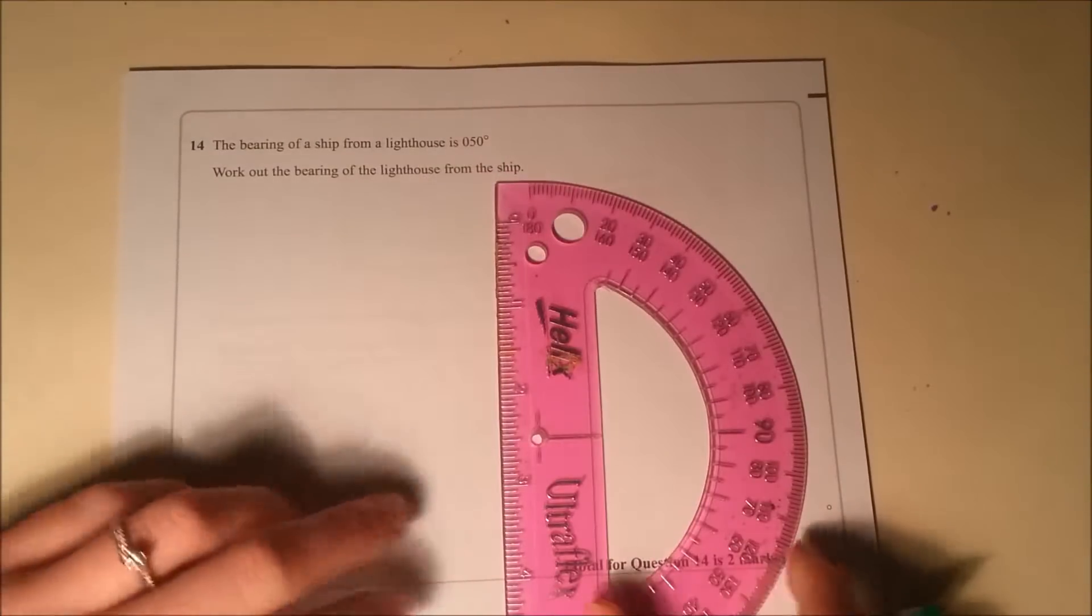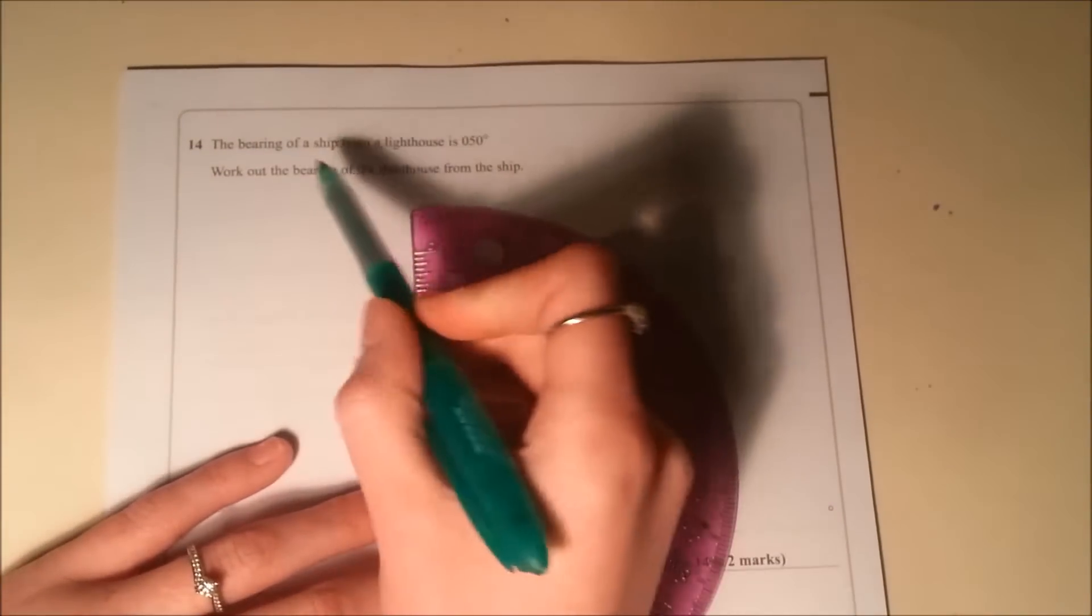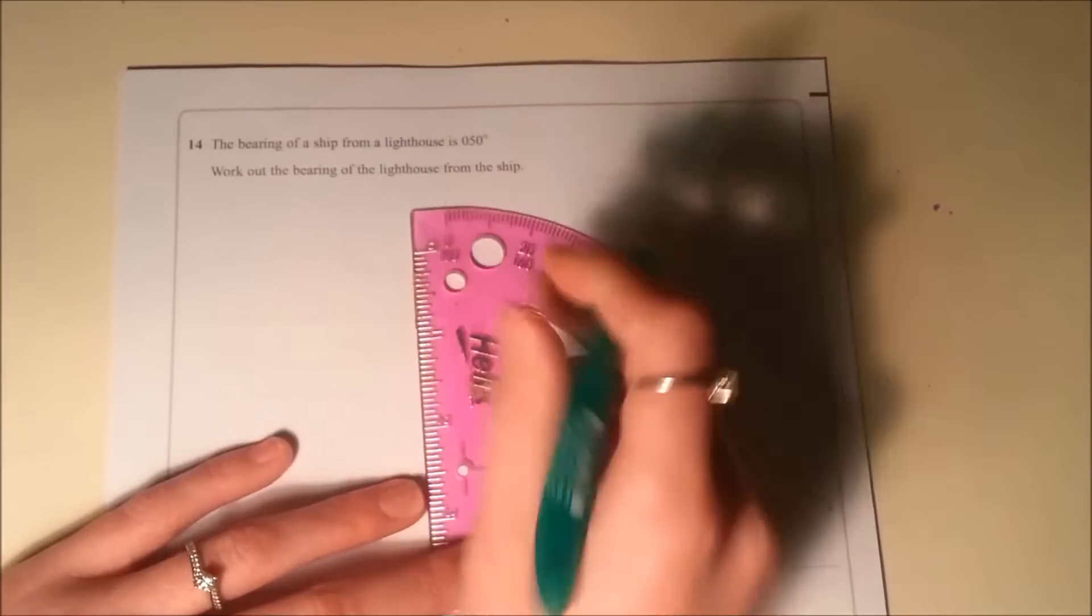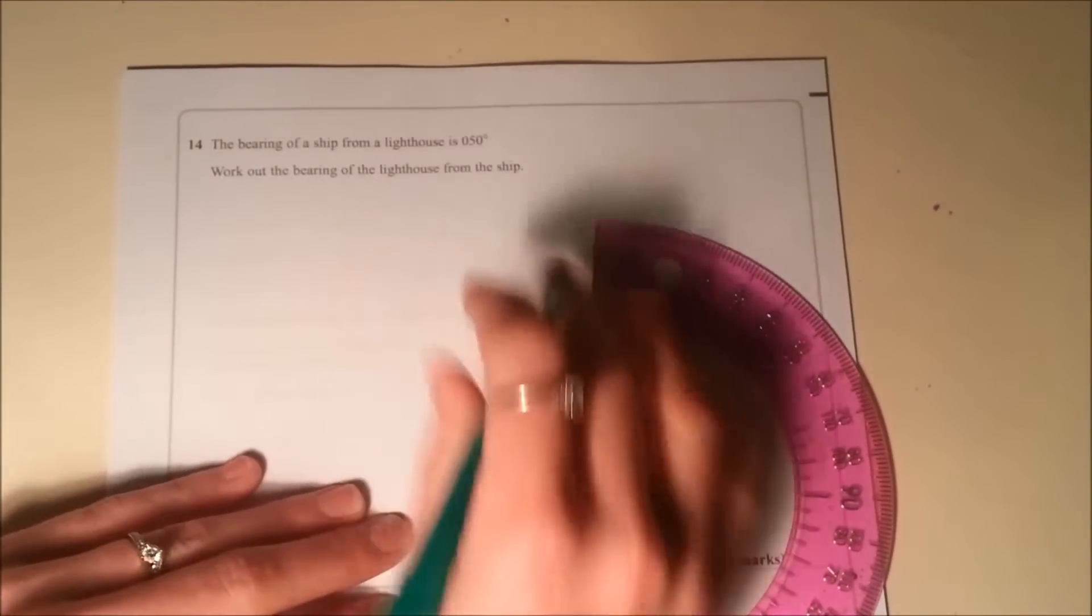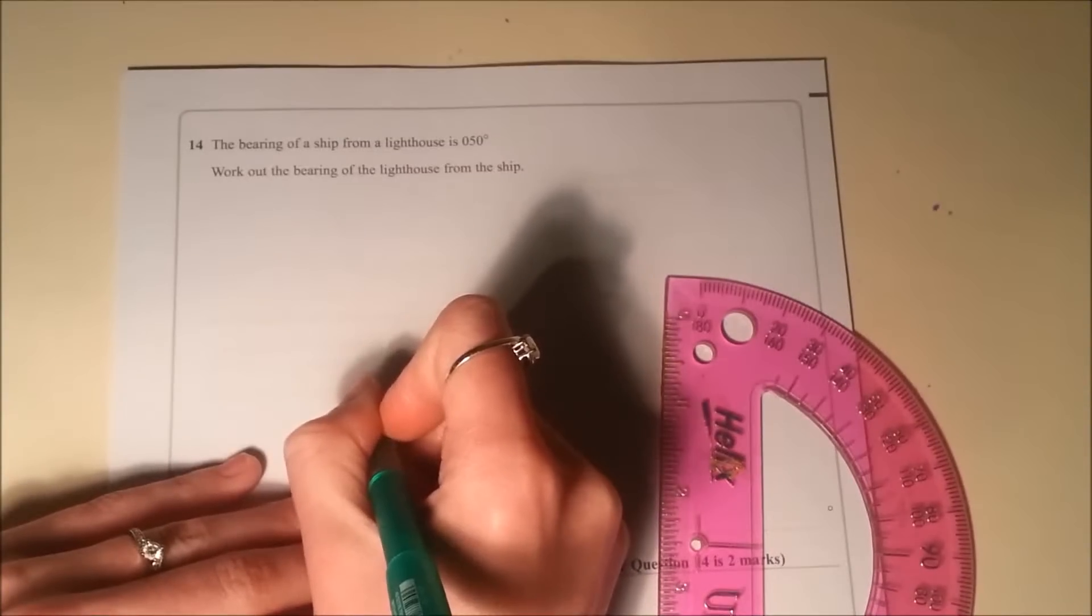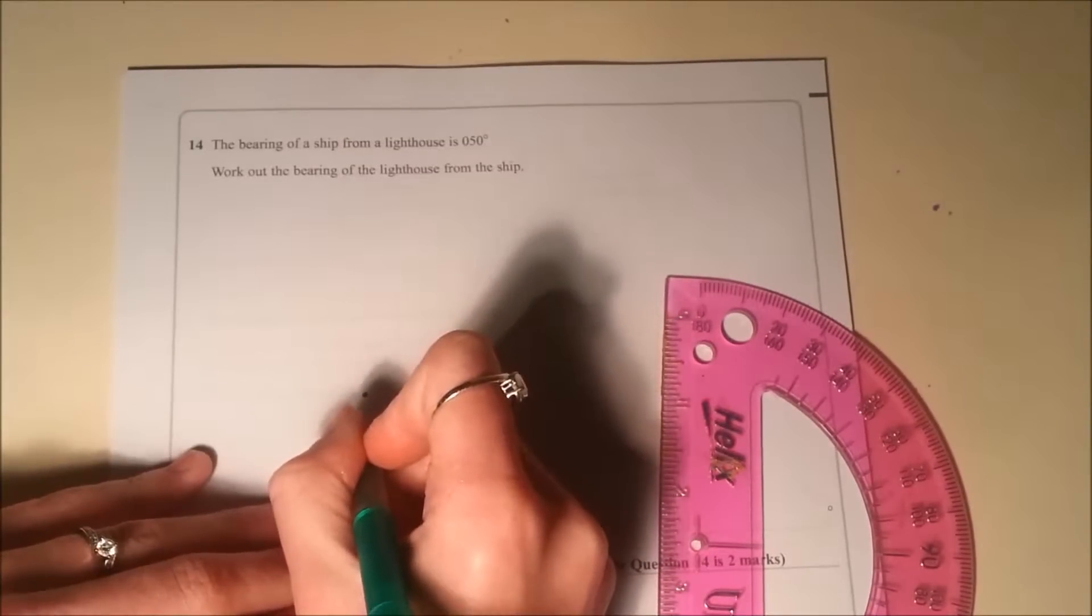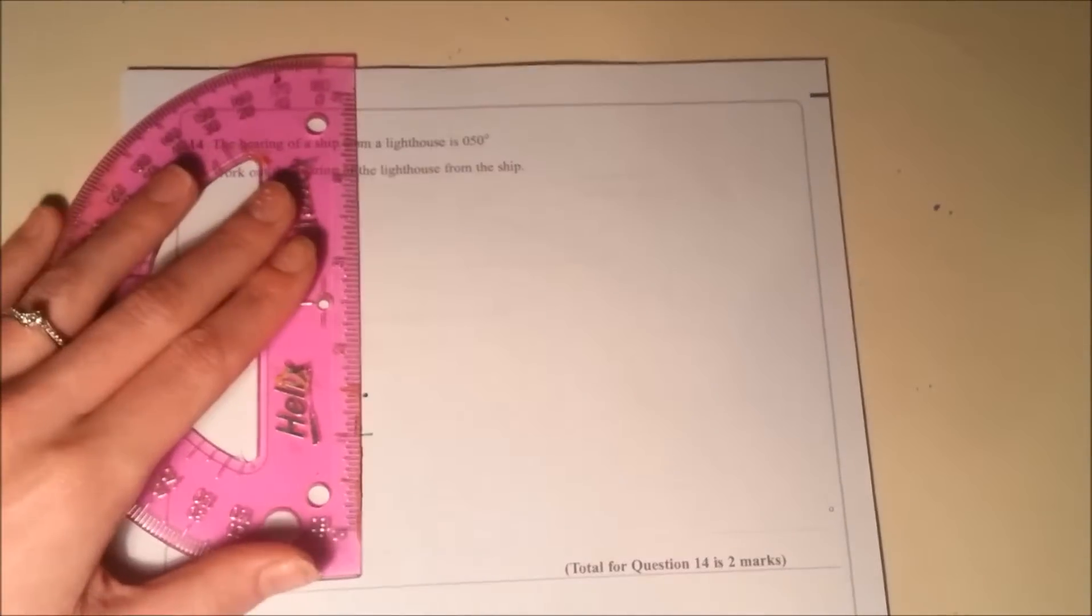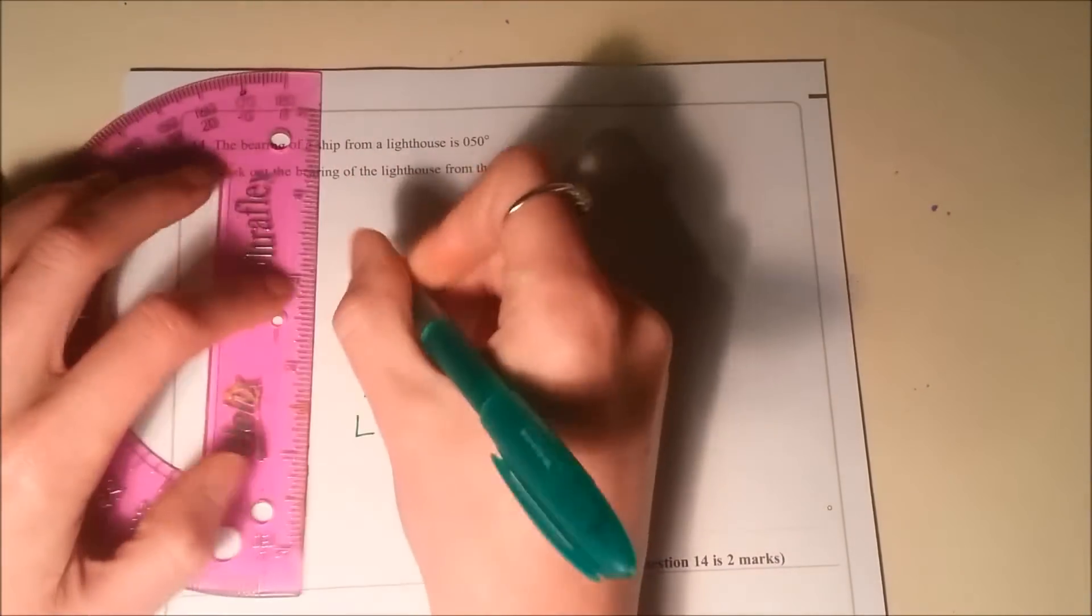I've got my hideous pink protractor here. The bearing of a ship from a lighthouse is 50 degrees, so what I'm going to do to start with is try and draw this. I've got from the lighthouse, so if I start at the lighthouse, and bearings are always measured from north, clockwise.